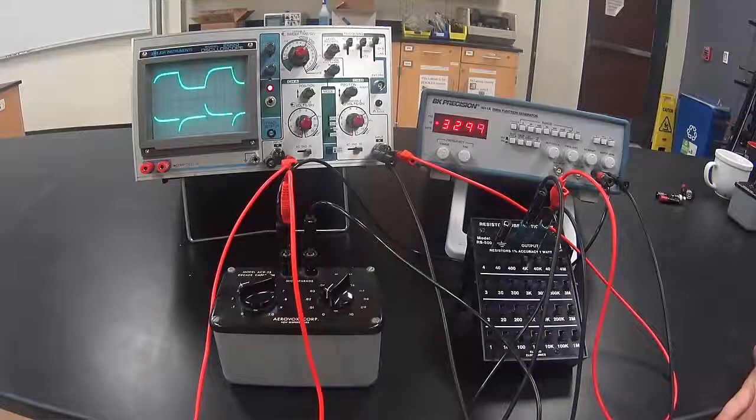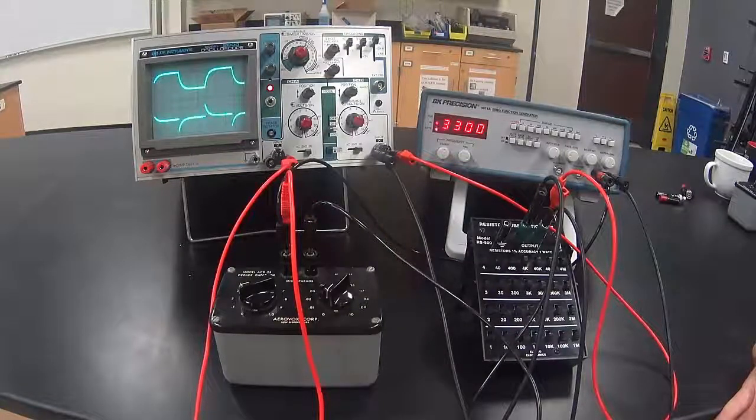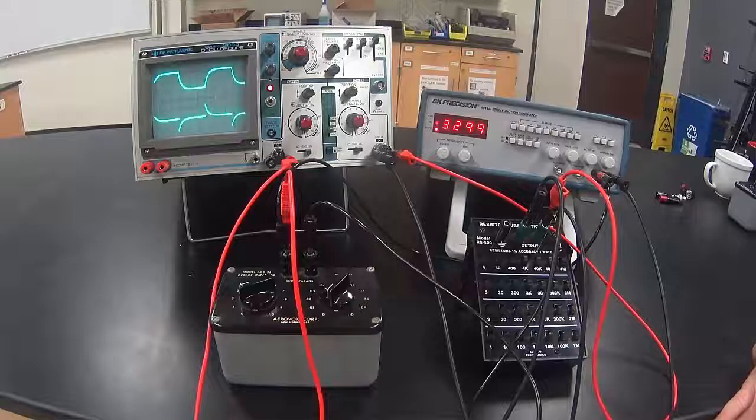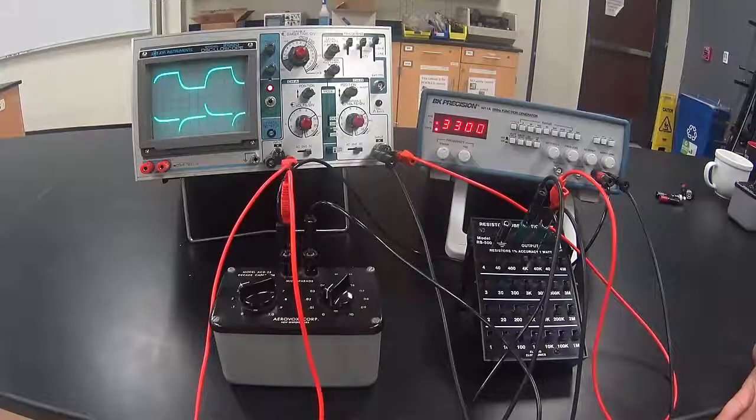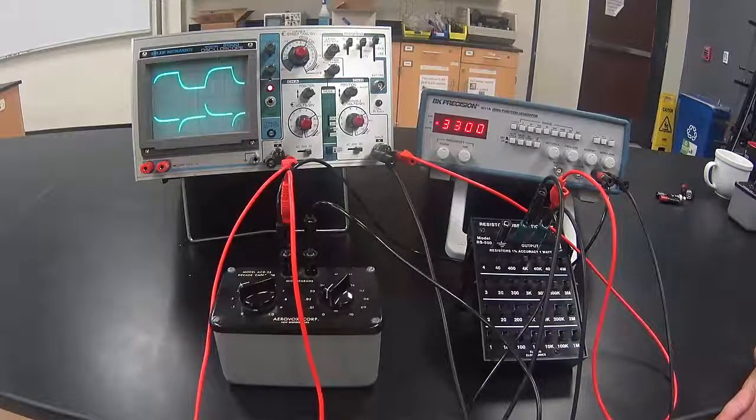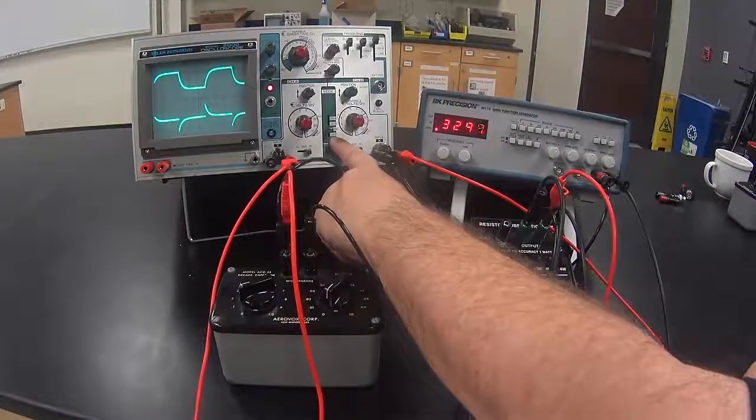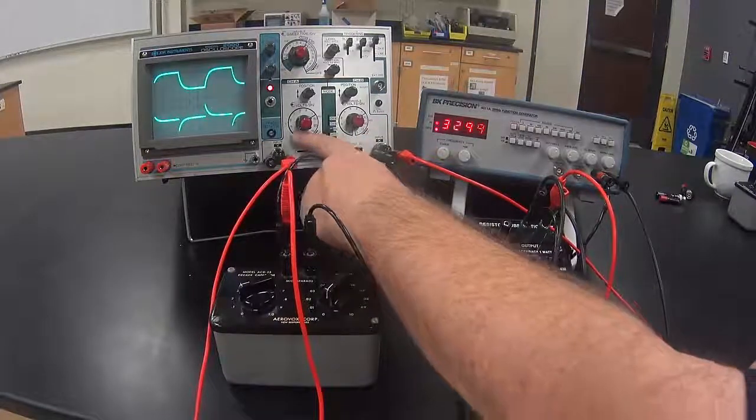If we were to add these two signals together, we should get the voltage across the function generator, which is a square wave. This is really easy to do with this oscilloscope. You simply change the mode to add.